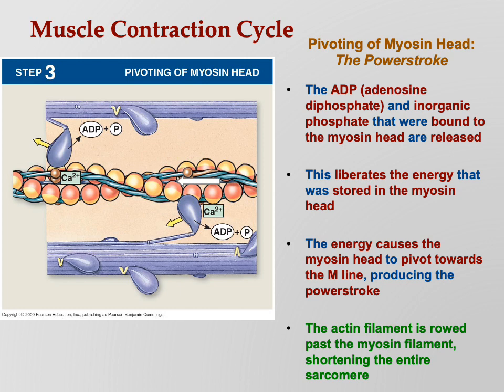We've done part of a contraction, but it's like a tug of war - you don't just pull the rope once. You pull and then reorient your hands and pull some more. With one power stroke we move the thin filament a little way, but we've got to keep moving it. The myosin head has already pivoted as far as it can pivot, so it's going to have to let go, reorient, and then grab again and pivot again.